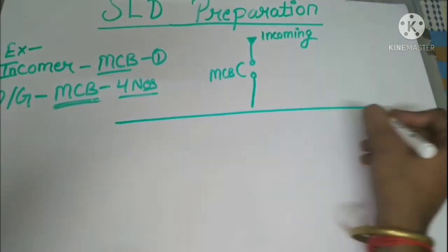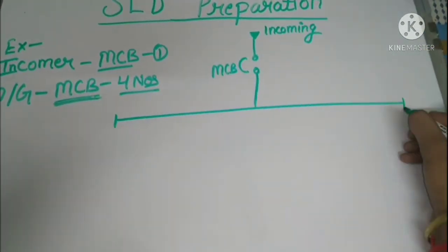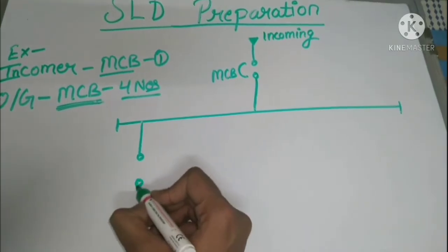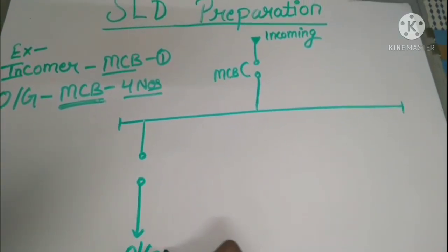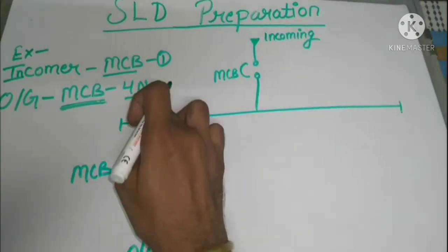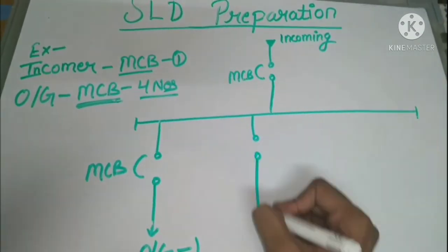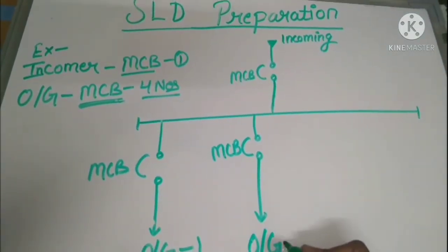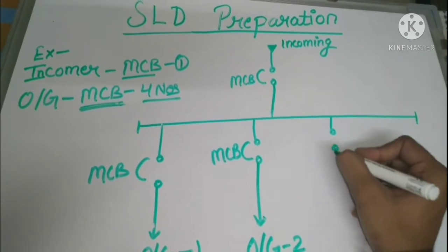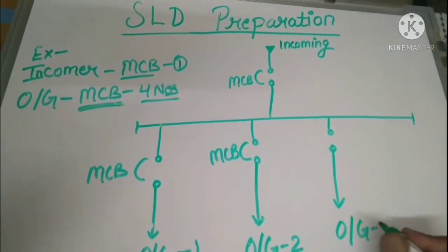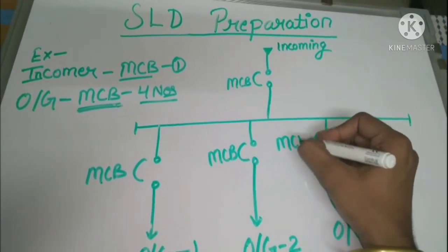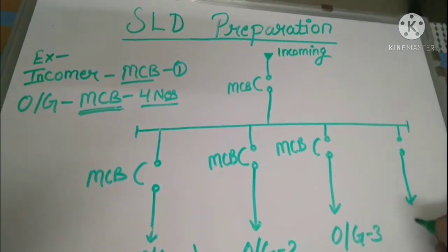And we have 4 outgoings. So for this, this is horizontal bus bar. And this is outgoing 1. This is MCB. Quantity was 4. Now this is third one. This is fourth one.